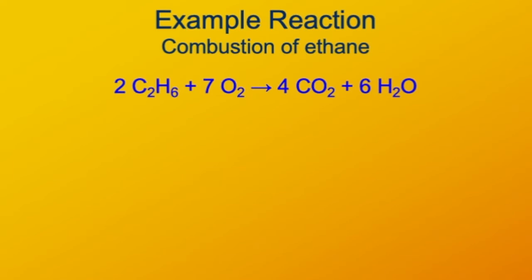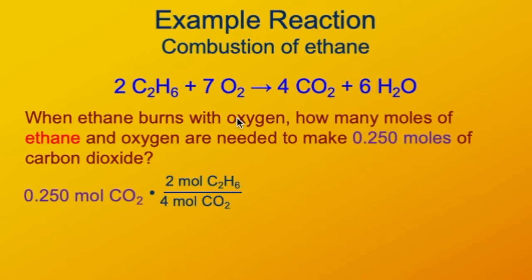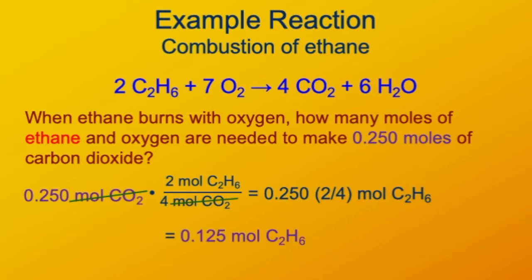Now we'll ask a slightly different question. Instead of starting from the reactants, we'll aim toward the products. If we want to produce 0.25 moles of carbon dioxide, how much ethane do we need? Starting with 0.25 moles of CO₂, we have 2 moles of ethane for every 4 moles of carbon dioxide. The moles of carbon dioxide cancel out, and it requires 0.125 moles of ethane to make 0.25 moles of CO₂.